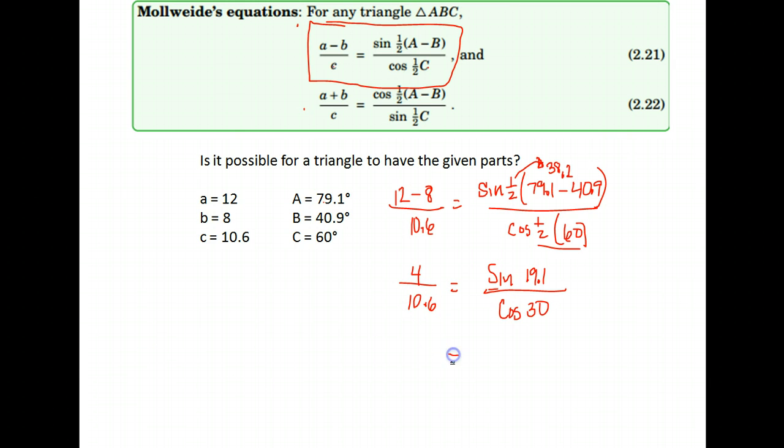I'm going to calculate the value of each side of the equation. We're checking to see if this is a valid equation - are the two sides actually equal. So here we do 4 divided by 10.6 and I'm going to write this out as long as I can, so 0.37735849. On this side I do the sine of 19.1 divided by the cosine of 30 and I get 0.377838684.